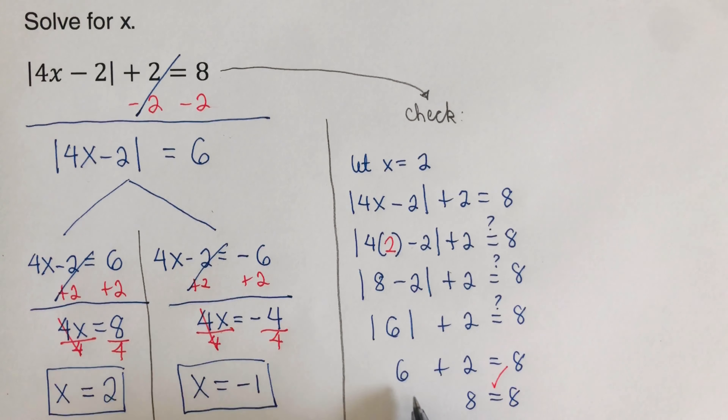Now check x = -1: rewrite the original equation, change the variable to parentheses, and plug in -1. The work confirms it checks out. So both x = 2 and x = -1 are solutions to this equation.